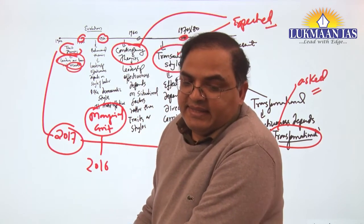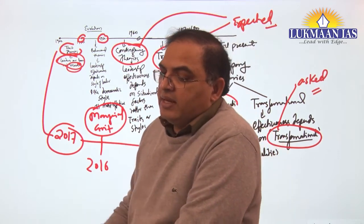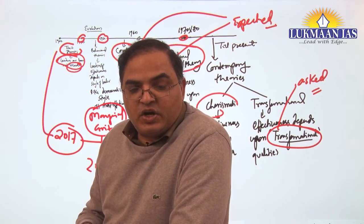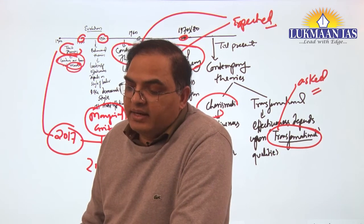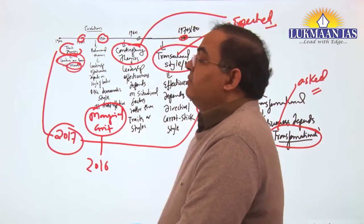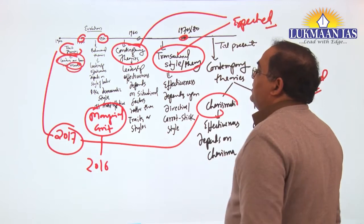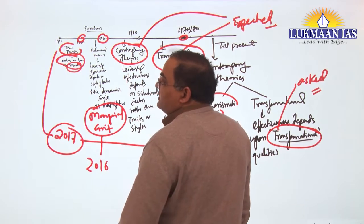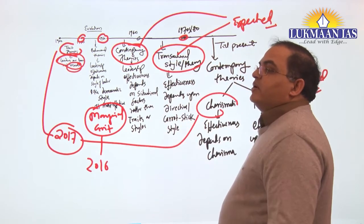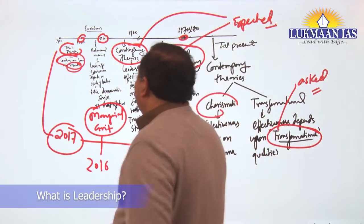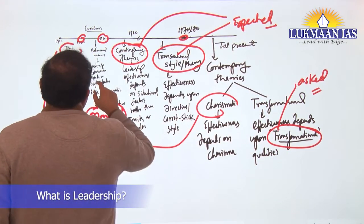Followed by traits they started talking - that there are certain traits which differentiate between leader and non-leader. And traits are inborn, means people are inborn, leaders are inborn. But that was rejected. Leaders are not born, but they can be made also. And Mary Parker Follett had also rejected.